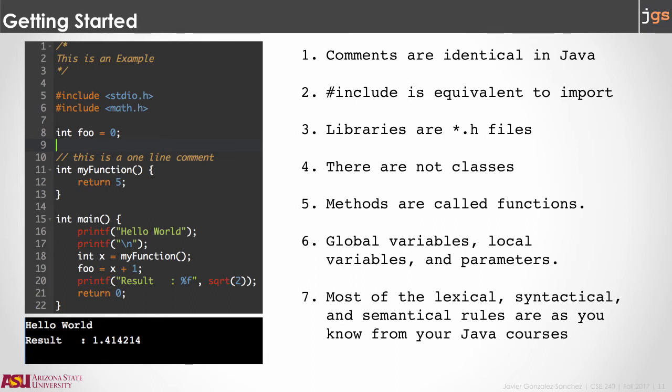The full program, the file, have two methods: my function and main. And there is one global variable, foo. Instead of methods, we call main and my function functions. So methods when they are inside of classes, like in Java or in C#, C++, but when you do not have classes, you call them functions.